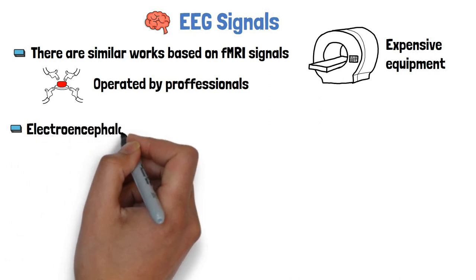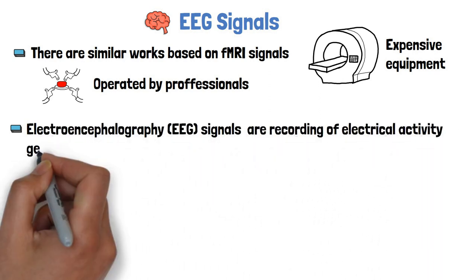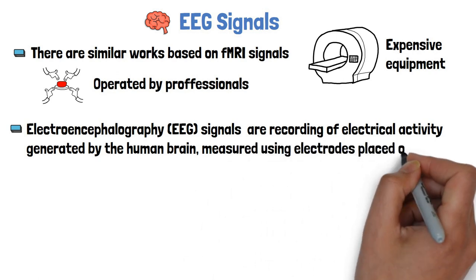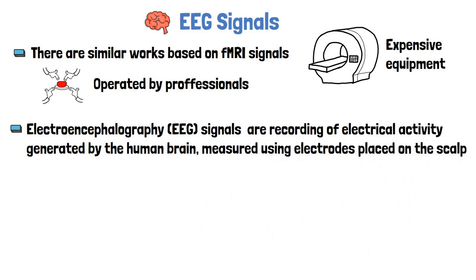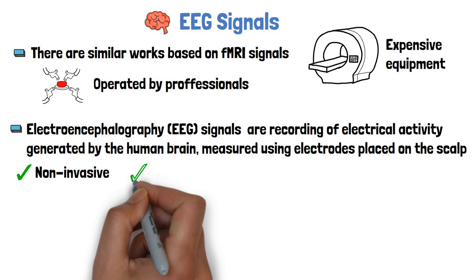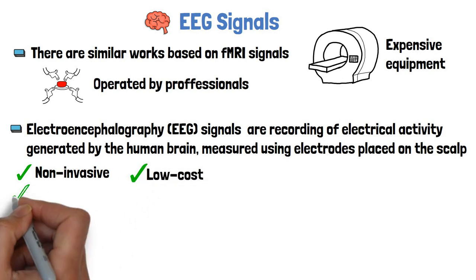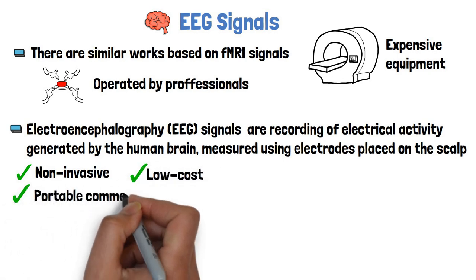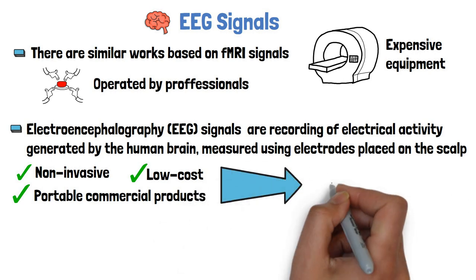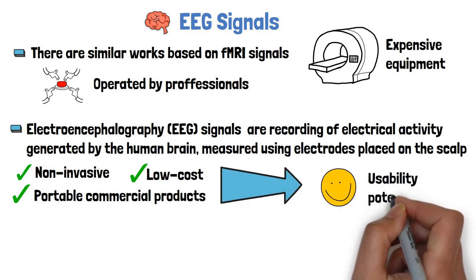Electroencephalography, or EEG signals, are a recording of electrical activity generated by the human brain, measured using electrodes placed on the scalp. So obtaining the signal is non-invasive and does not require expensive equipment — there are even portable commercial products that can do that. All of that makes a model based on EEG signals have higher usability potential.